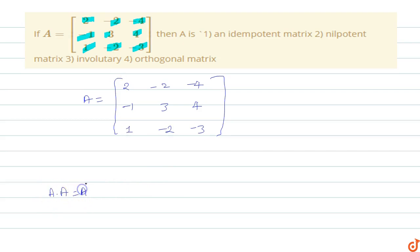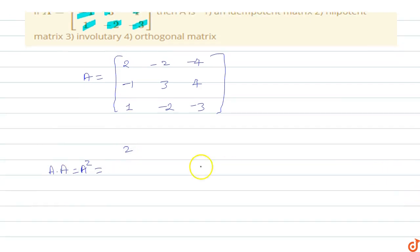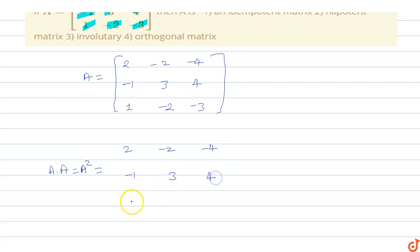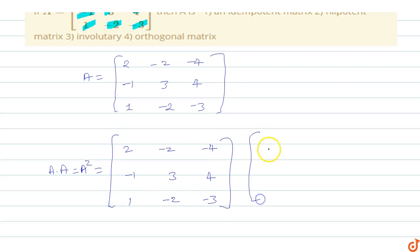A squared: we have to multiply matrix A with itself. So we write: 2, minus 2, minus 4, minus 1, 3, 4, 1, minus 2, minus 3, multiplied by matrix A.